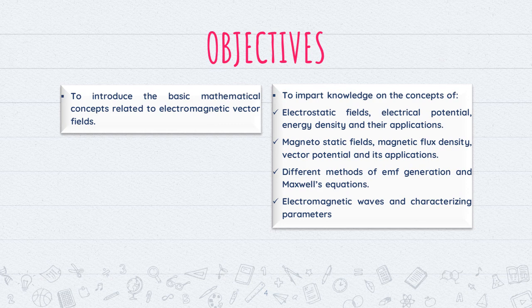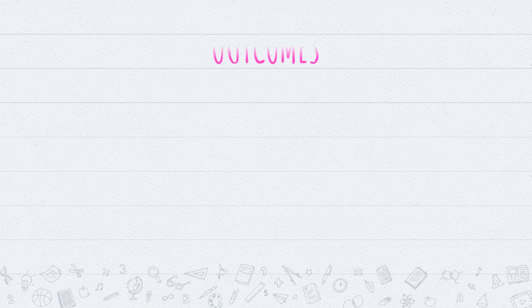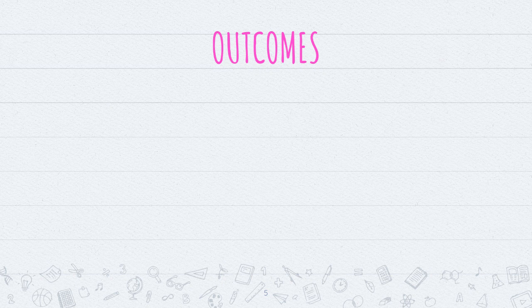These are all the different objectives of this Electromagnetic Theory subject. Now, what are the outcomes? We are discussing the objectives, and next we will see what are the final outcomes of this subject. After learning this subject, we should know the main objective and the main outcomes of each particular subject.